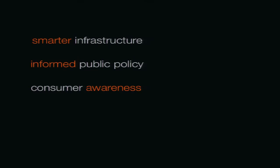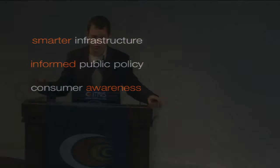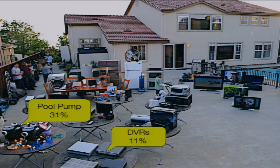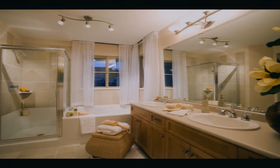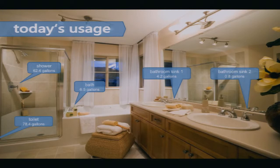There are several ways to achieve reductions: smarter infrastructure, better demand strategies, more informed public policy, and consumers being more aware of their usage. Sensing the end uses of gas, electricity, and water is particularly important. You want to know things like your pool pump consumes 31% of all electricity in your home, or that your DVR consumes 11%, or that the shower is consuming 60 gallons per day. But how do you get this information cheaply and easily?